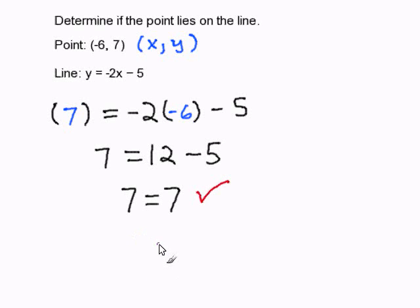When that happens, we can say yes, that the point (-6, 7) lies on the line y = -2x - 5.